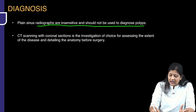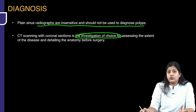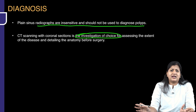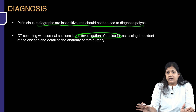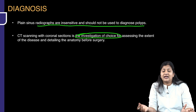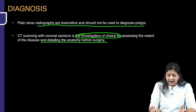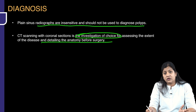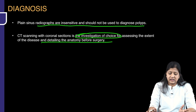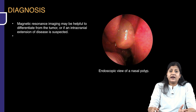CT scanning is the investigation of choice. Do we want a contrast or a plain scan? We want a plain scan. We don't need contrast because polyps are not vascular. A non-contrast CT scan is done to identify the anatomy before surgery and to understand the disease. Endoscopic examination will also help in understanding the diagnosis.